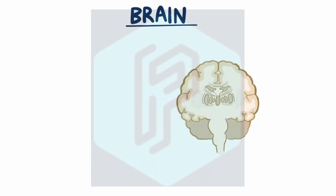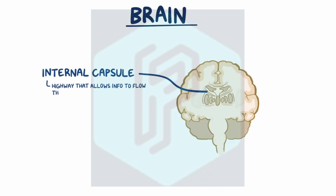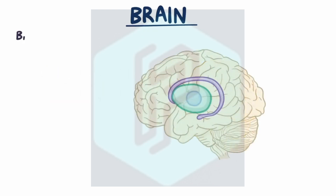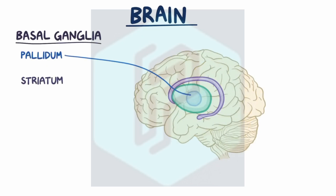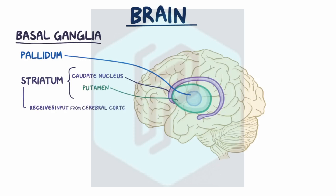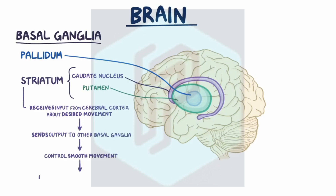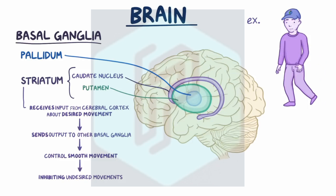Within the white matter, there are deeper subcortical structures like the internal capsule, which is like a highway allowing information to flow through neurons going to and from the cerebral cortex. There's also the basal ganglia, which are two deep structures — the pallidum and the striatum — with the striatum further divided into the caudate nucleus and the putamen. The striatum receives input from the cerebral cortex about a desired movement and sends output to the other basal ganglia structures to control smooth movement by inhibiting undesired movements. For example, when you walk and one leg steps forward, the other leg gets inhibited by the basal ganglia so it stays stationary, preventing you from falling.